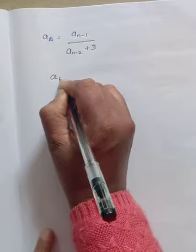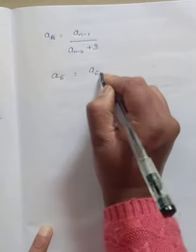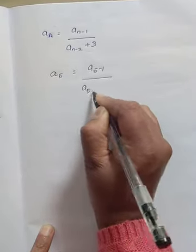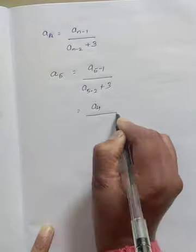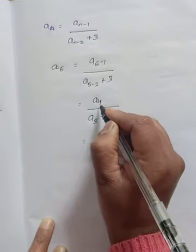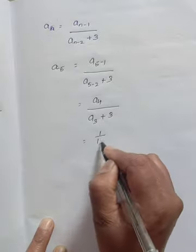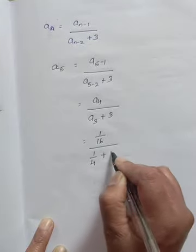Now let us find A5. So in the place of n we will write 5. A5, A5 minus 1 divided by A5 minus 2 plus 3. A4 divided by A3 plus 3. We know that A4 value is 1 by 16, A3 value is 1 by 4 plus 3.